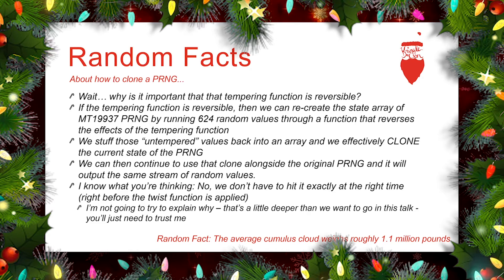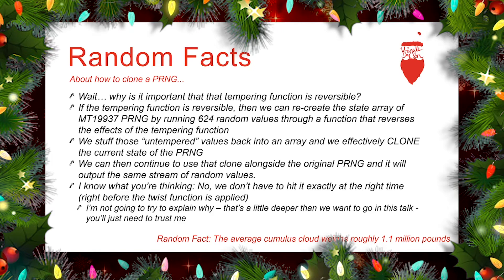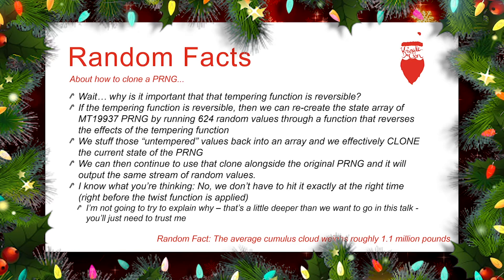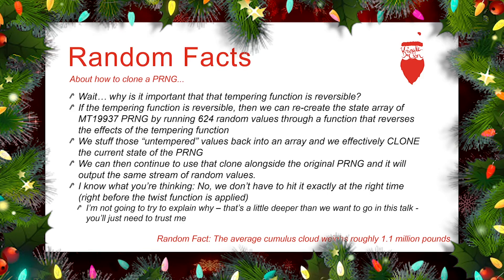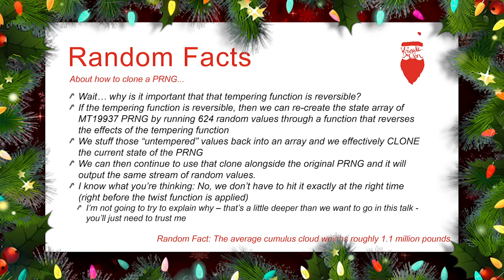We can then use that array in our own MT19937 pseudo-random number generator and start generating random numbers. What we'll find is we're generating the same random numbers as the original random number generator — we have, in effect, cloned the random number generator. We don't have to hit this at exactly the right time, right before that twister function is being used, because it's a linear feedback shift register kind of function that works cyclically on the array. You're going to have to trust me on that, as the mathematics involved require more time than I have to explain here.